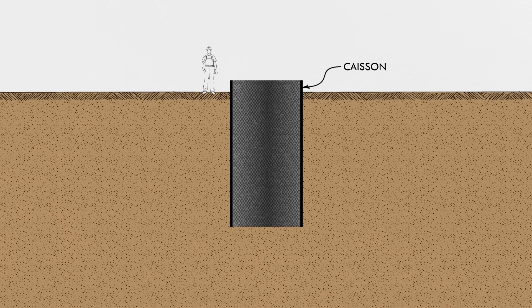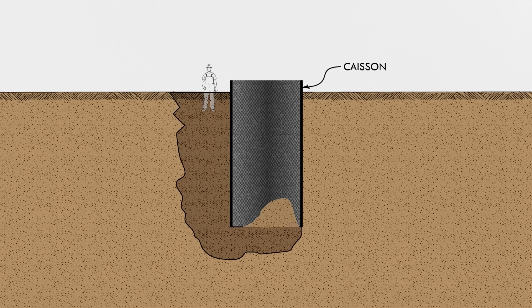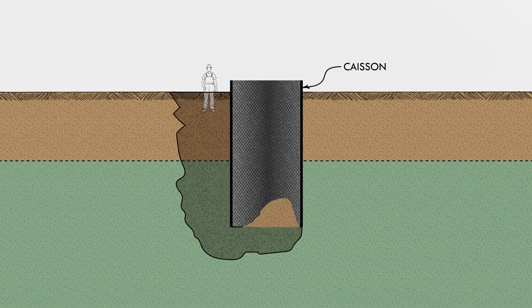A steel caisson had been installed to hold back soil while the lift station could be constructed. One worker on the site was suddenly pulled into a sinkhole when the bottom of the caisson blew out. The cause of the incident was related to groundwater within the soils below the site.